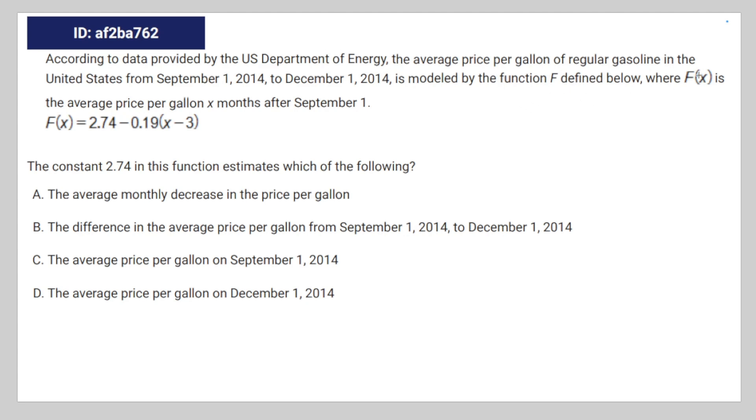by the function F, defined below, where f of x is equal to, or f of x is the average price per gallon, x months after September 1st.